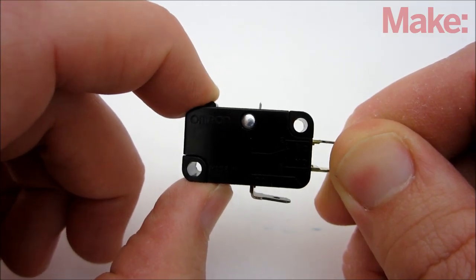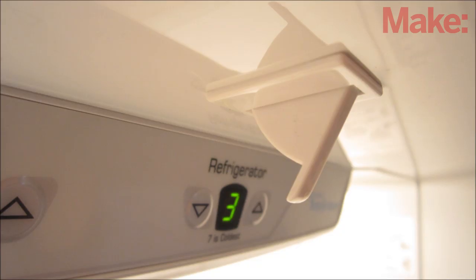The momentary switch is used to turn the lights off when the chest is closed, just like a refrigerator's light switch.